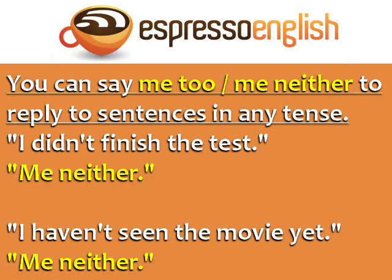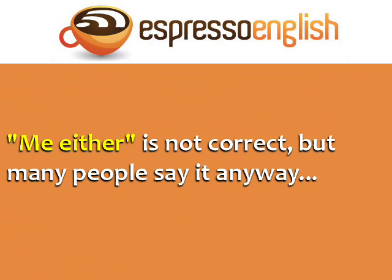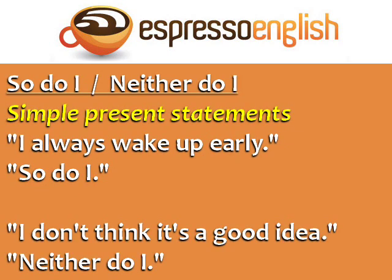For example: 'I didn't finish the test' — me neither. 'I haven't seen the movie yet' — me neither. Note: 'me either' is not correct, but many people say it anyway. Now let's learn a more advanced way to agree in English. You can say 'so do I' or 'neither do I' in response to simple present statements.